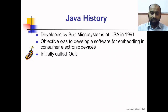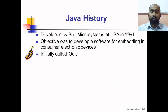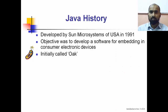Another story says that Oak is a symbol of strength and is chosen as a national tree of many countries like the USA, France, Germany, and Romania, and because of that they chose Oak as the name for their programming language.